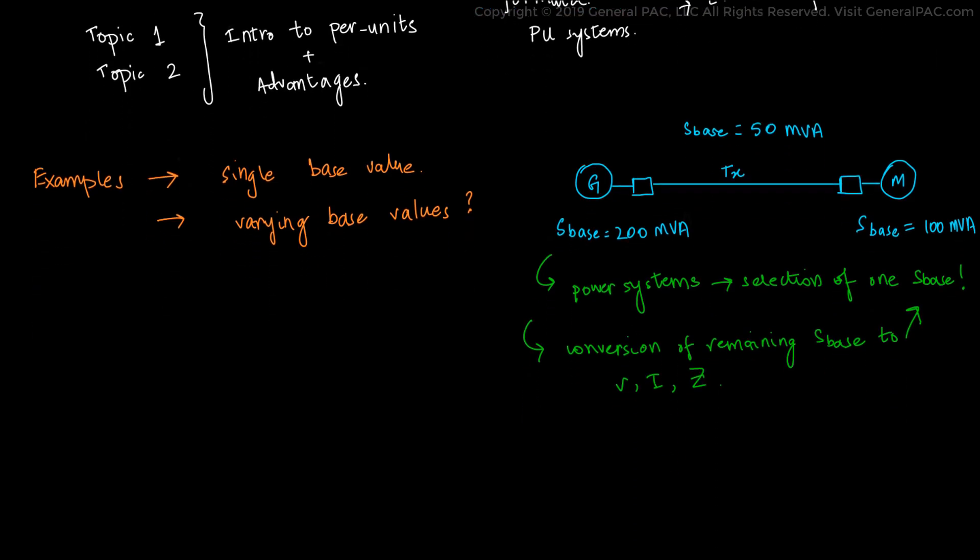Such type of power systems require the selection of one base for the whole system and also require conversion of different bases to the selected one, and the same goes for the other quantities involved. We know that when we convert a power system into per unit equivalents, we find out per unit impedances according to the selected base value.